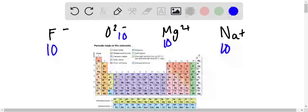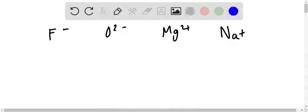These ions have a different number of protons. The number of protons, for example in fluorine is 9, in oxygen it's 8, in magnesium it's 12, in sodium it's 11. So they have a different number of protons even though they have the same number of electrons.